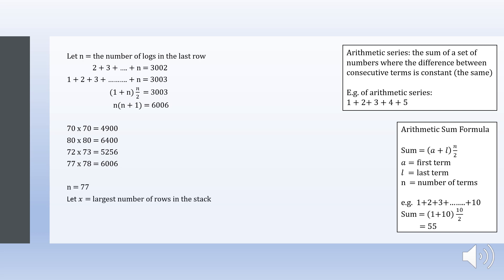Let x equal the largest possible number of rows in the stack. x must be 77 minus 1, because the top row of logs originally started with 2 logs, not 1.